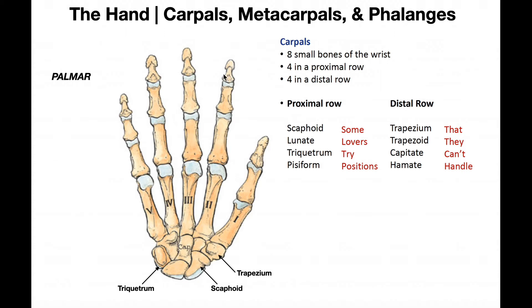You could do the same thing for digits two through five. What you want to notice, though, is that the pollux, or the thumb, only has two phalanges. There's no middle or intermediate phalanx — there's only a proximal phalanx and a distal phalanx.